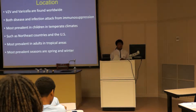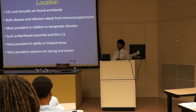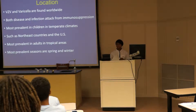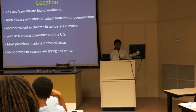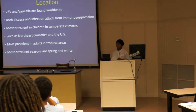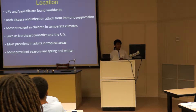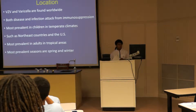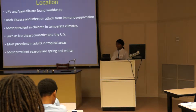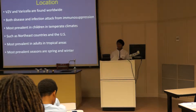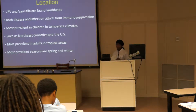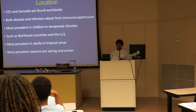Location. Varicella-Zoster Virus and Varicella are both found worldwide. Because where Varicella-Zoster Virus is, Varicella infection is sure to occur. Both the disease and infection attack immunosuppressed or weakened immune systems. It is most prevalent in children in temperate climates, including Northeast countries and the U.S. It is most prevalent in adults in tropical areas. However, adults most likely get shingles or herpes zoster infection, because it is a reactivated virus of Varicella. The most prevalent seasons are spring and winter.